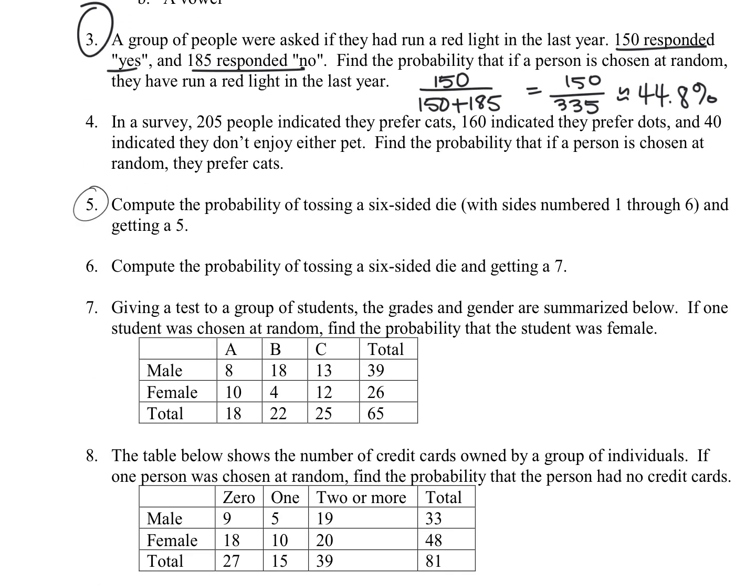For question number five, we're trying to compute the probability of tossing a six-sided die, and we're looking at the numbers one through six, we want to get a five. So the probability of that happening would be one time out of those six.